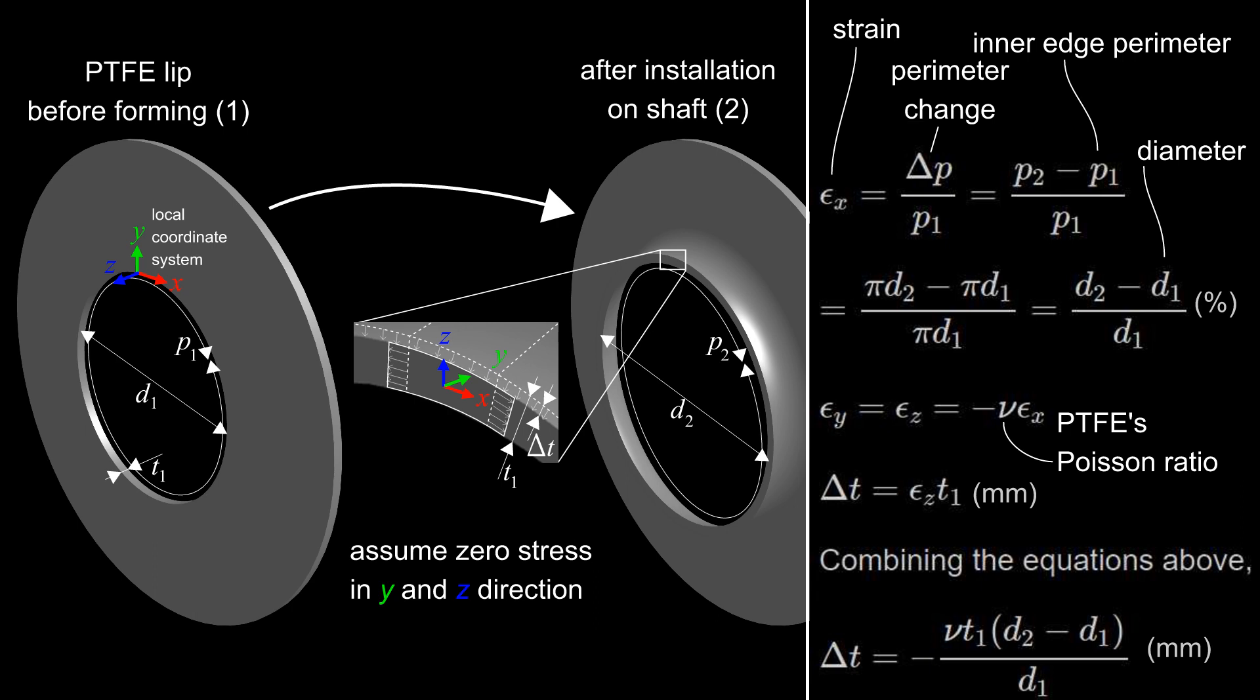The strain epsilon z in the local thickness direction is calculated by multiplying hoop strain epsilon x with the material Poisson ratio nu and flipping its sign. This assumes that the lip is free to deform in the local y and z directions, which is not entirely true.